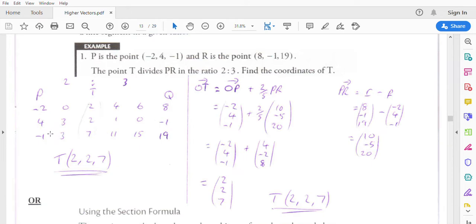Same again for the z-component. We're increasing by 20. Divide that by the 5 steps. So we'll be increasing by 4 on each step. So 3, 7, 11, 15, 19. So point T will be at 2, 2, 7. And that's it. Well done.